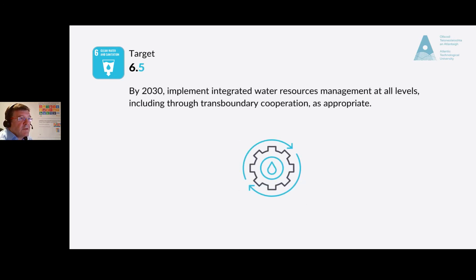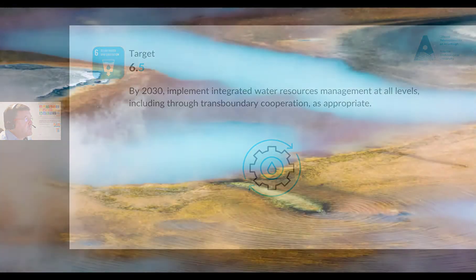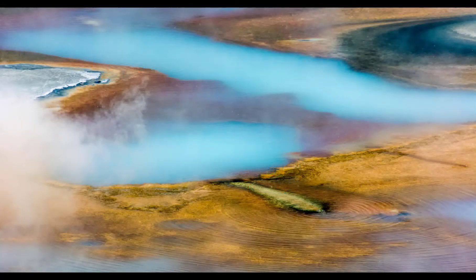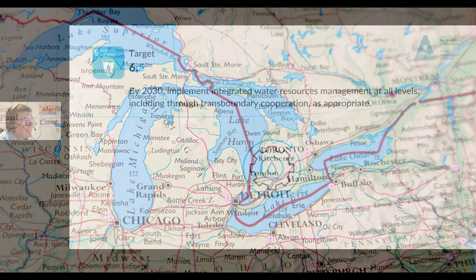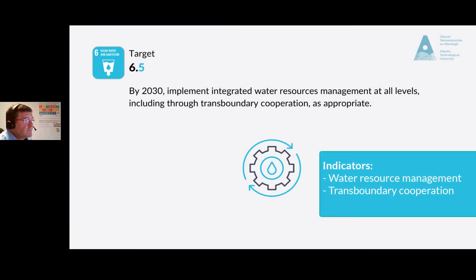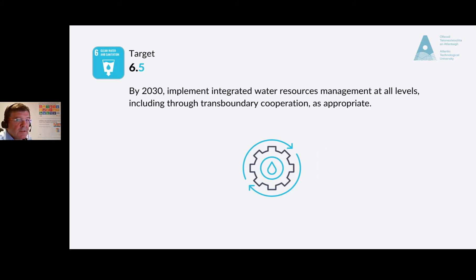Target 6.5: by 2030, implement integrated water resources management at all levels, including through transboundary cooperation as appropriate. Transboundary waters are the aquifers, lakes, and river basins shared by two or more countries. The indicators for this target will be the degree of integrated water resource management and the proportion of transboundary basin area with an operational arrangement for water cooperation. We will go into these technical terms in more detail in the individual SDG units.